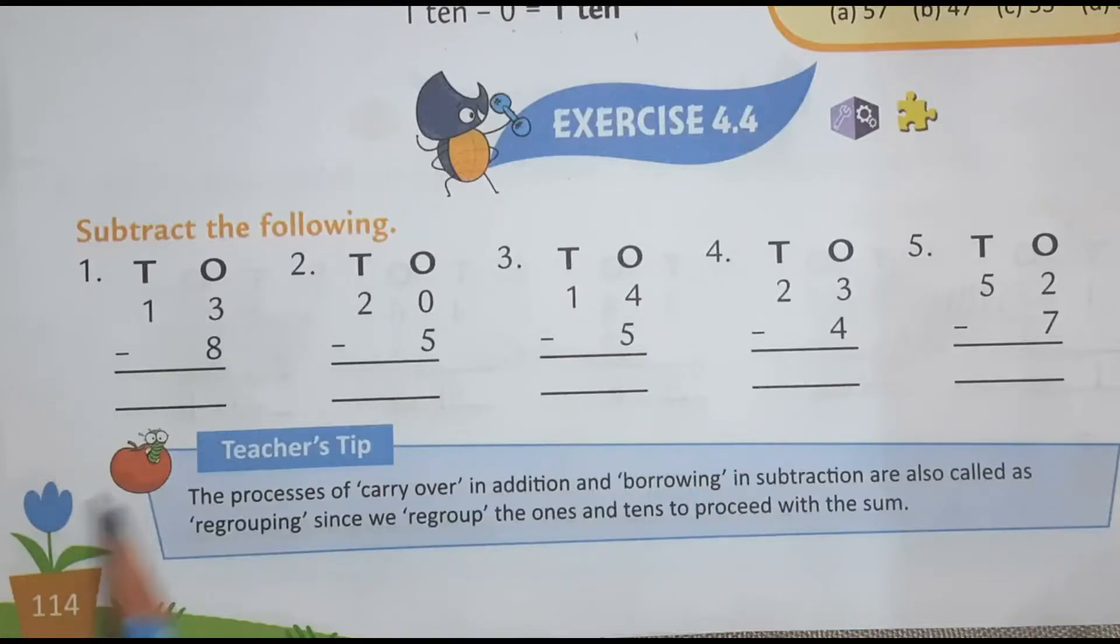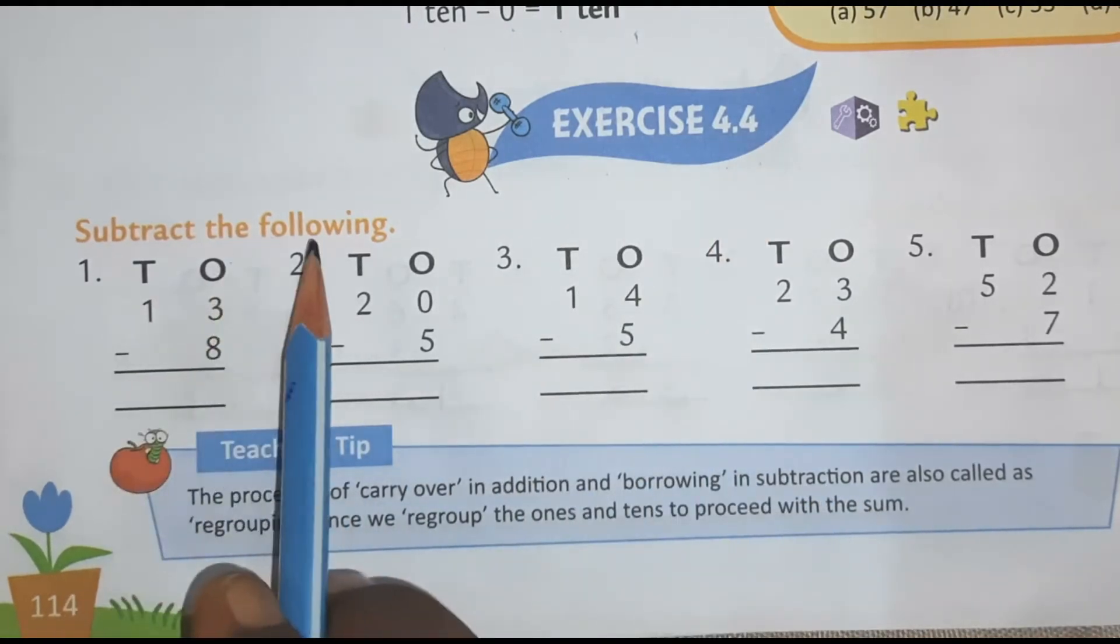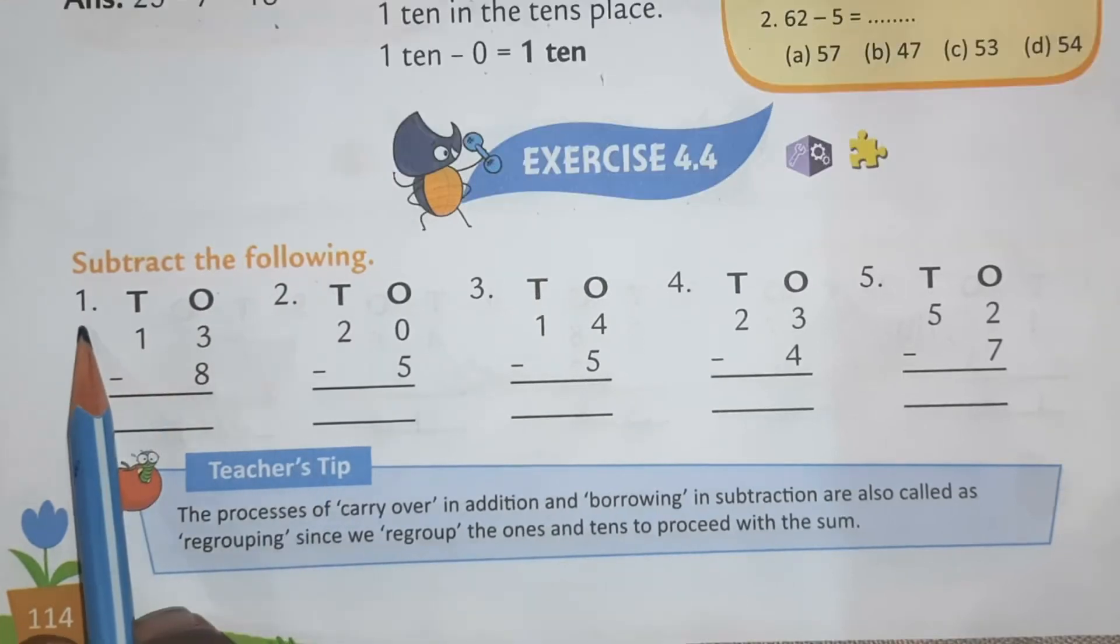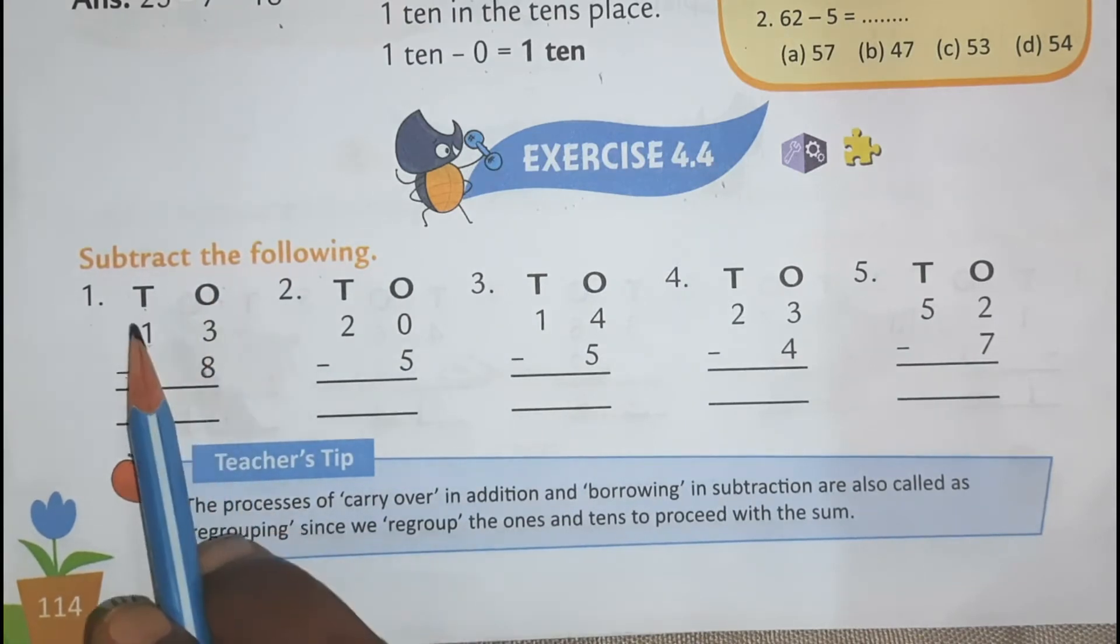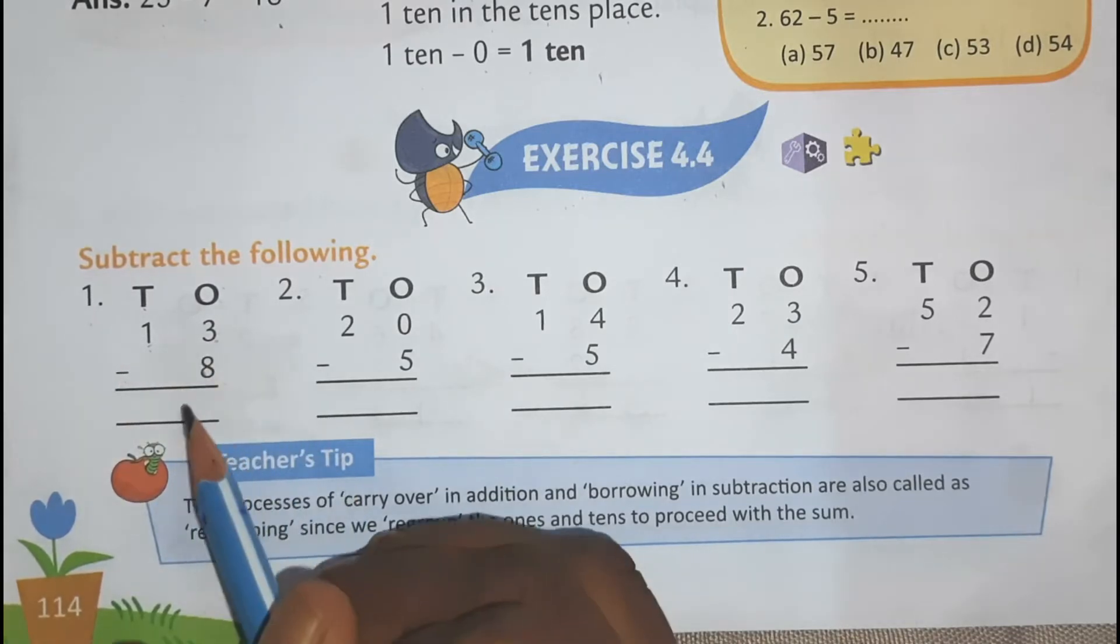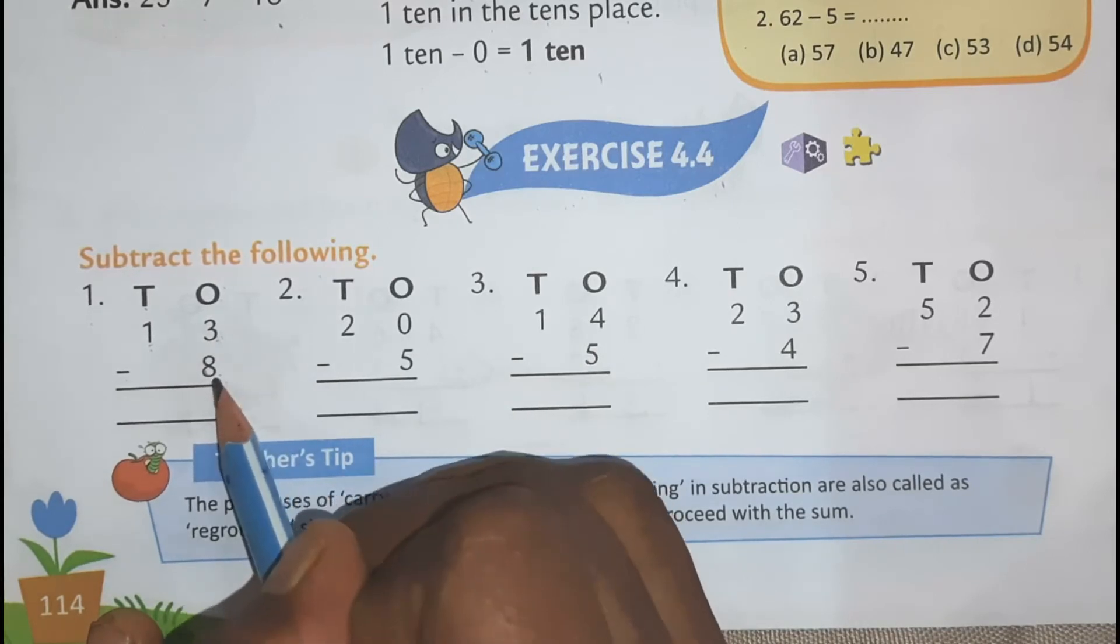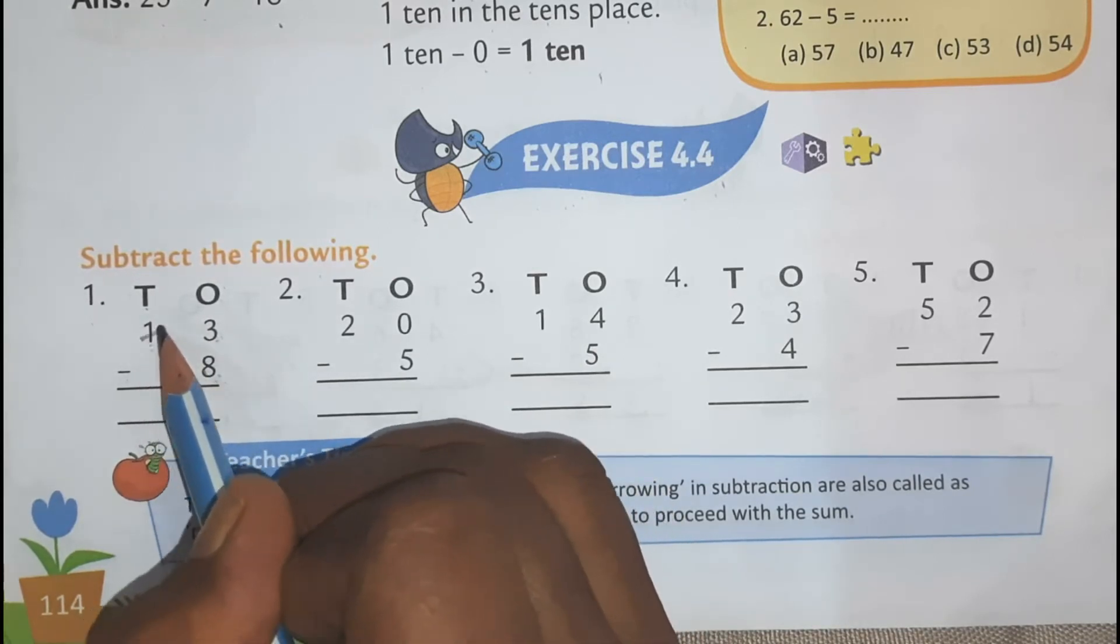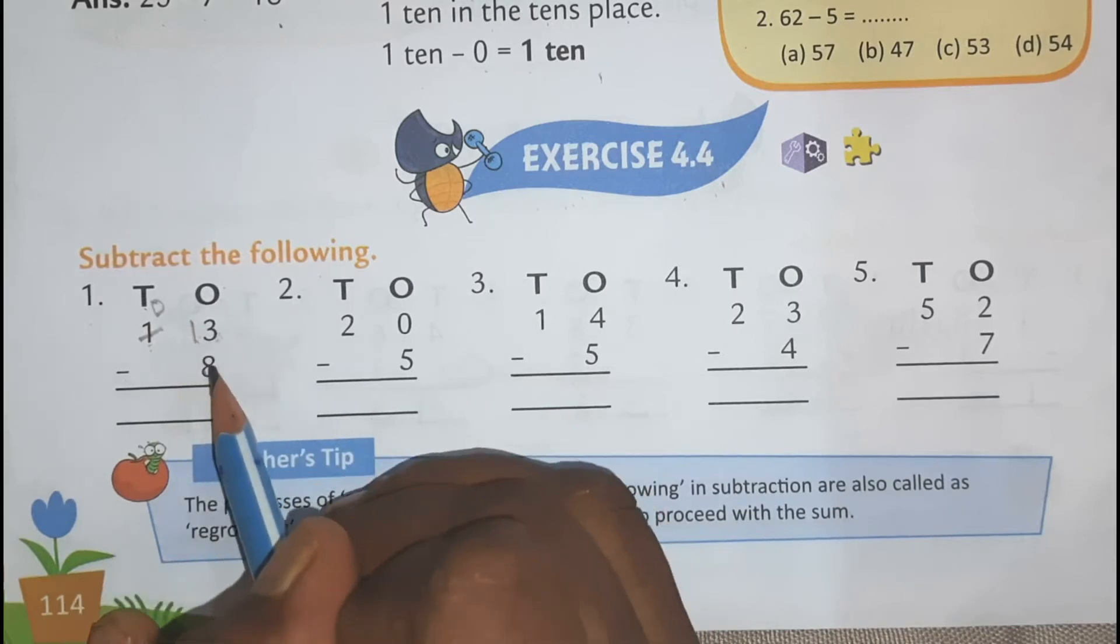So children, now let's solve exercise 4.4. Subtract the following. Number 1, 13 minus 8. 10s, 1s. So this is your 13 minus 8. So how you have to do? 3 minus 8 we can't do because 3 is less than 8. So we have to borrow from 10s place. So this 1 minus 1 will become 0 and this 3 will become 13.